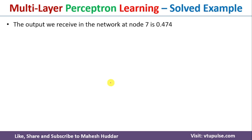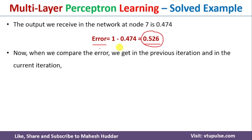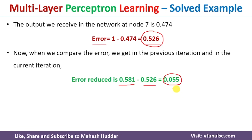We calculate the error again: error = 1 − 0.474 = 0.526. Comparing with the previous epoch, the error was 0.581 and is now 0.526. The change in error is 0.055, meaning the error has been reduced after updating the weights.